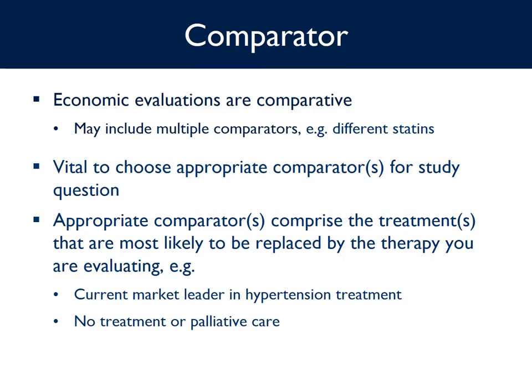Economic evaluations are comparative. We always compare one intervention with another to calculate incremental costs and effects. This may include multiple comparators, such as different statins or doses of statins. However, it is vital to choose appropriate comparators for the study question. For example, analysis that uses a comparator that is not relevant for the UK is one of the main sources of uncertainty in NICE technology appraisal decisions for cancer drugs, and this uncertainty can lead the appraisal committee to being unable to recommend the drug for routine use in the National Health Service.